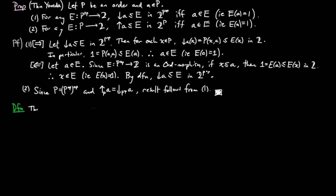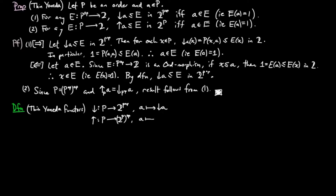We define the thin Yoneda functors as: the lower segment functor from p to the functor category [p^op, 2], sending a to the lower segment on a; and the upper segment functor from p to the opposite of the functor category of p^op to 2, sending a to the upper segment on a.